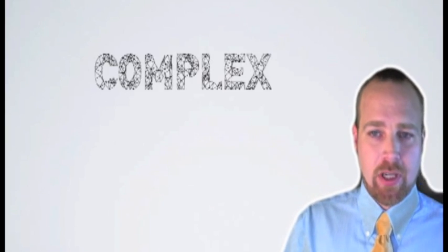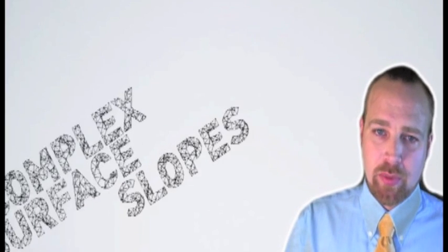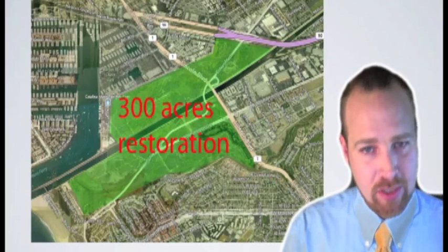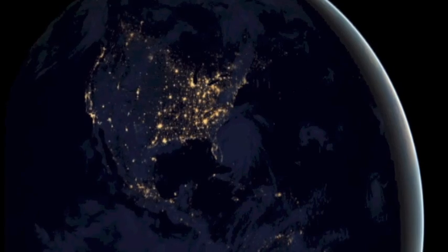Why can't Civil just model in Revit? The short answer: complex surface slopes, various calculations and analysis tools, large project sites, world coordinates — and try imagining if every floor, roof, window, door, and stair had different slopes and angles. That would be a lot of angles. Could you imagine how big your file would be?